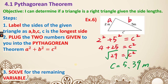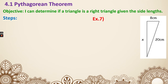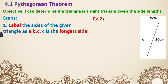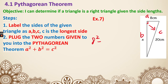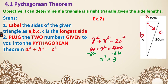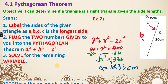Last one — example seven. This time the triangle looks slightly different, but it doesn't change anything. We still label them. That's the right angle facing, so that is our C. The other two are A and B. A is 8 so 8 squared, B is X so X squared, equals C which is 20 so 20 squared. That gives 64 plus X squared equals 400. Subtract 64 from both sides: X squared equals 336. Square root both sides — typing into the calculator gives X equals 18.33. Don't forget the unit: centimeter. Always keep the positive.